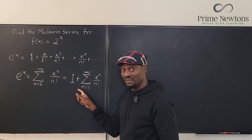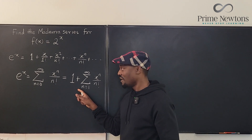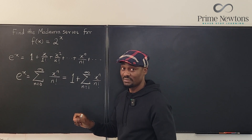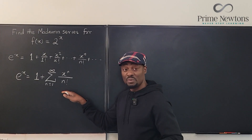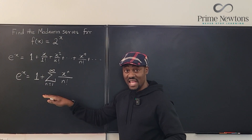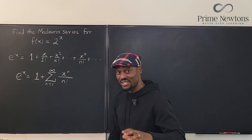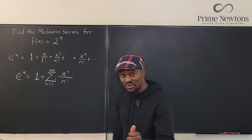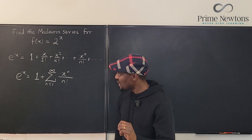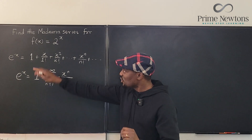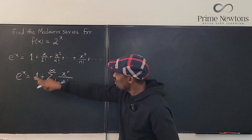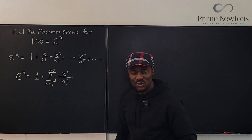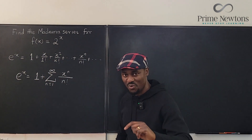It was the reason I took the previous video down because zero raised to power zero would be a problem. Now that we have a clean formula for the Maclaurin series for e to the x, this is what we can do. We can try to see if we can write 2 to the x in terms of e — if we can make it look like e to the x.